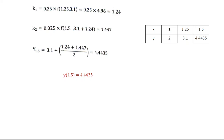Now go to the next step and repeat the same procedure in the next sub-interval. When you do that, you get y(1.5) = 4.4435. So in each sub-interval you calculate two slopes, find their average, and use that average slope to find the y value at the next point.